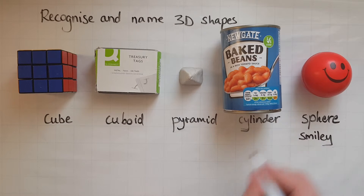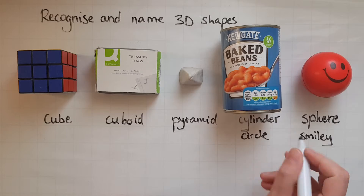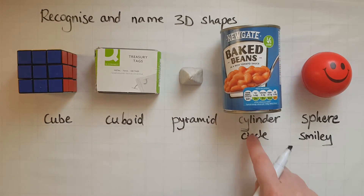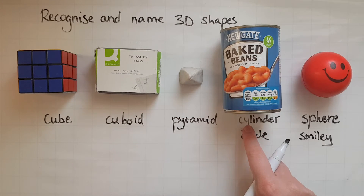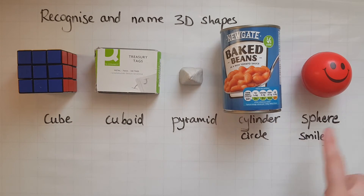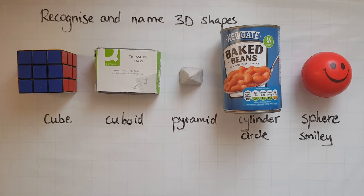Smiley, sphere. Cylinder, circle — circles on both sides, and that L is there to show it's long: cylinder. So you wouldn't confuse it with a sphere, which has a smiley face on. These are some clues to help you remember the names of these shapes and recognise them.